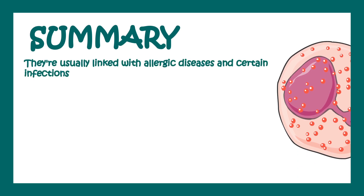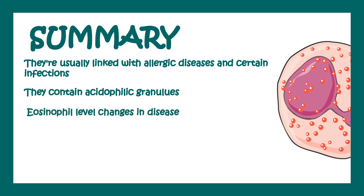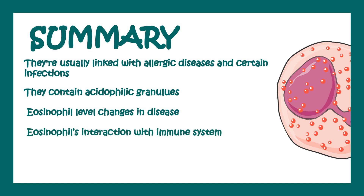In summary, Eosinophils are usually linked with allergic responses such as asthma or atopic dermatitis. They contain acidophilic granules filled with specific proteins whose names and functions we covered. Eosinophil levels change in disease — they can go up or down in specific conditions — and Eosinophils' interaction with the immune system carries bigger implications for understanding their biology.